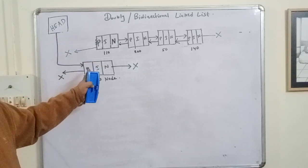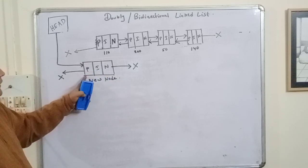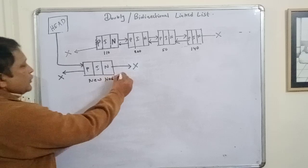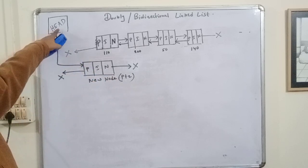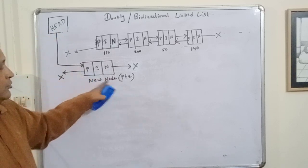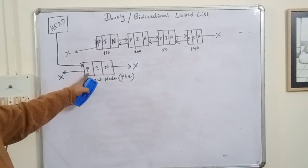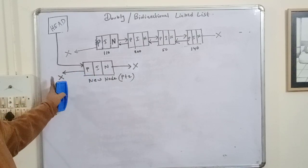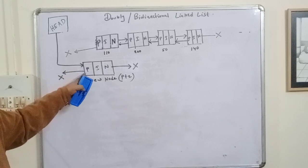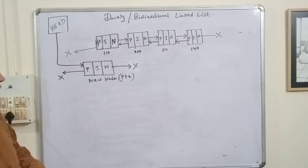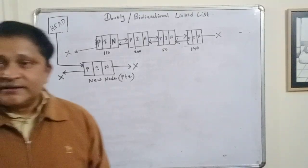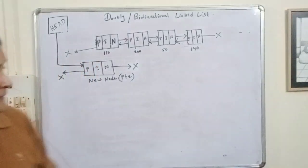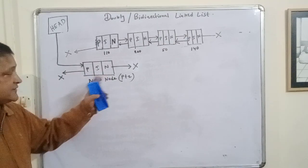When the linked list is originally empty and we are going to insert a new node, the address of the new node — we can call it PTR — should be stored in the head pointer so that head can point to the new node PTR. The previous pointer of PTR contains null because there is nothing previous to the first node, and next should also contain null because the list is empty and this will be the first and last node.